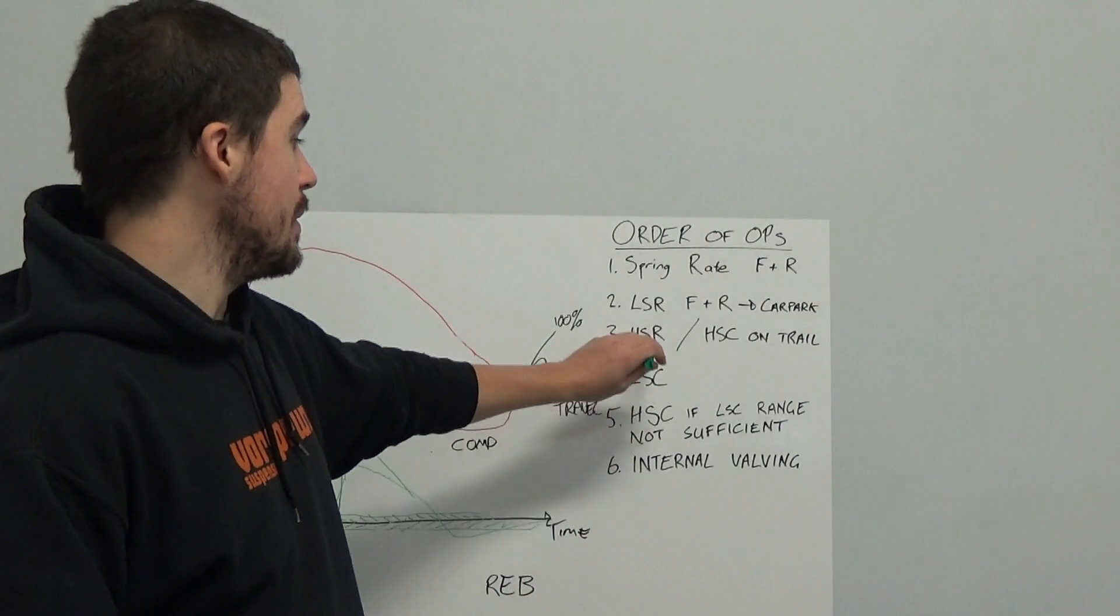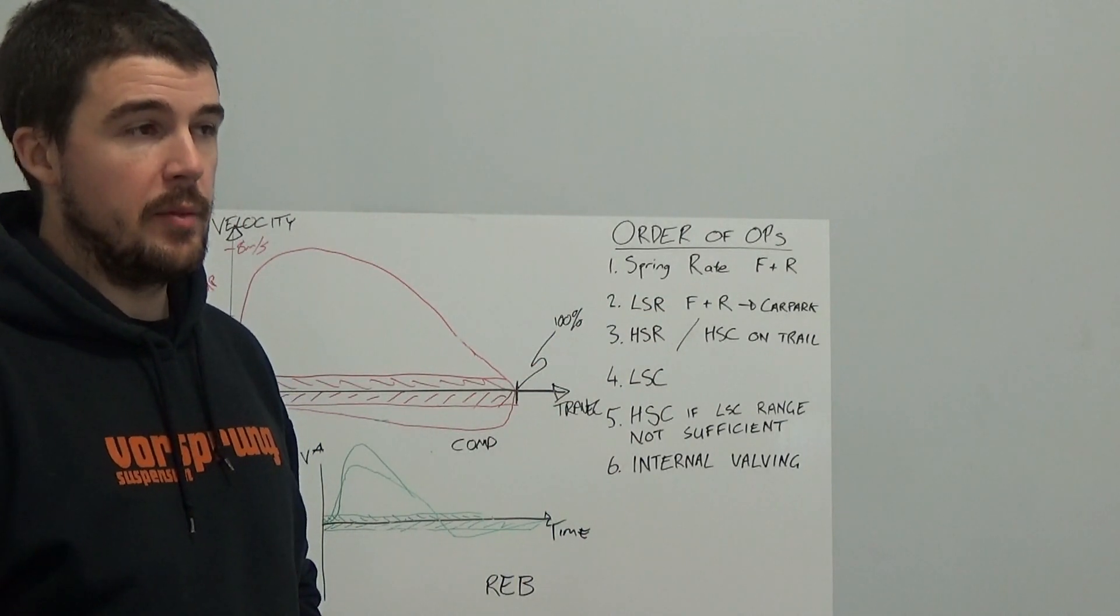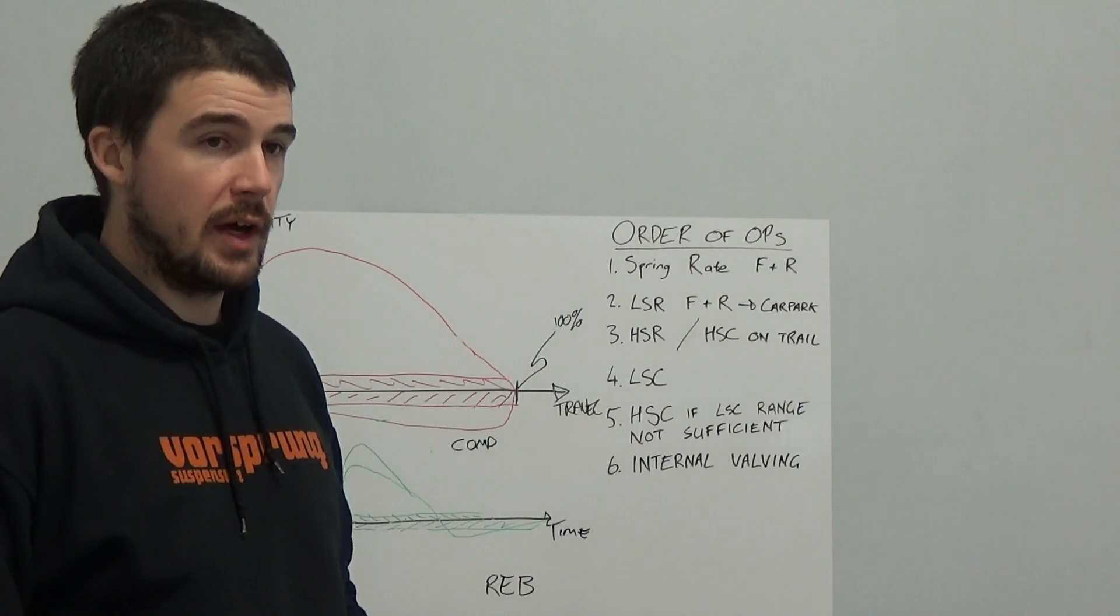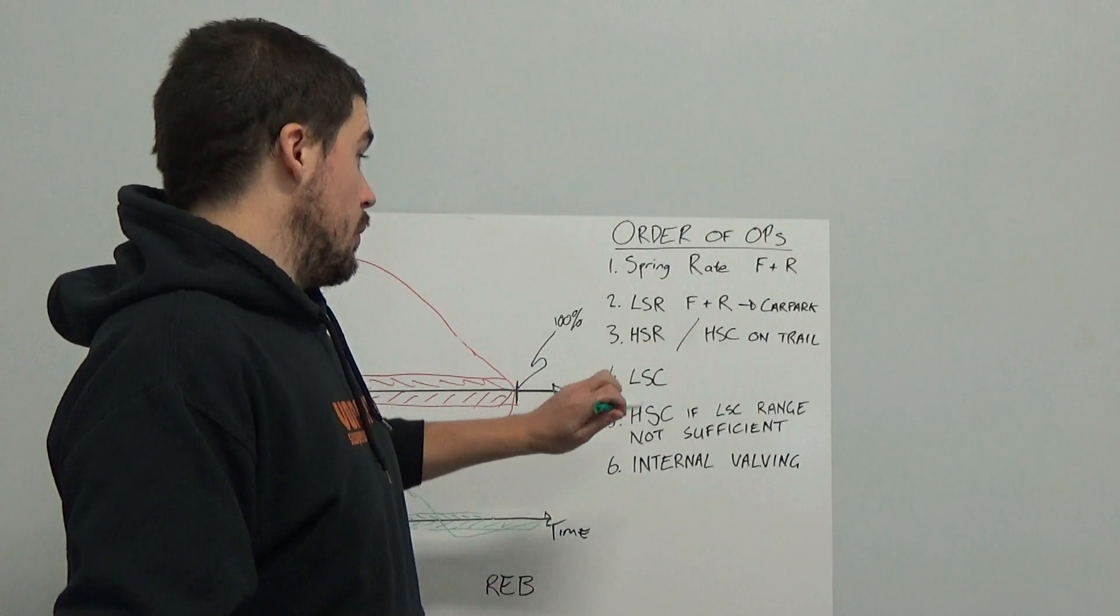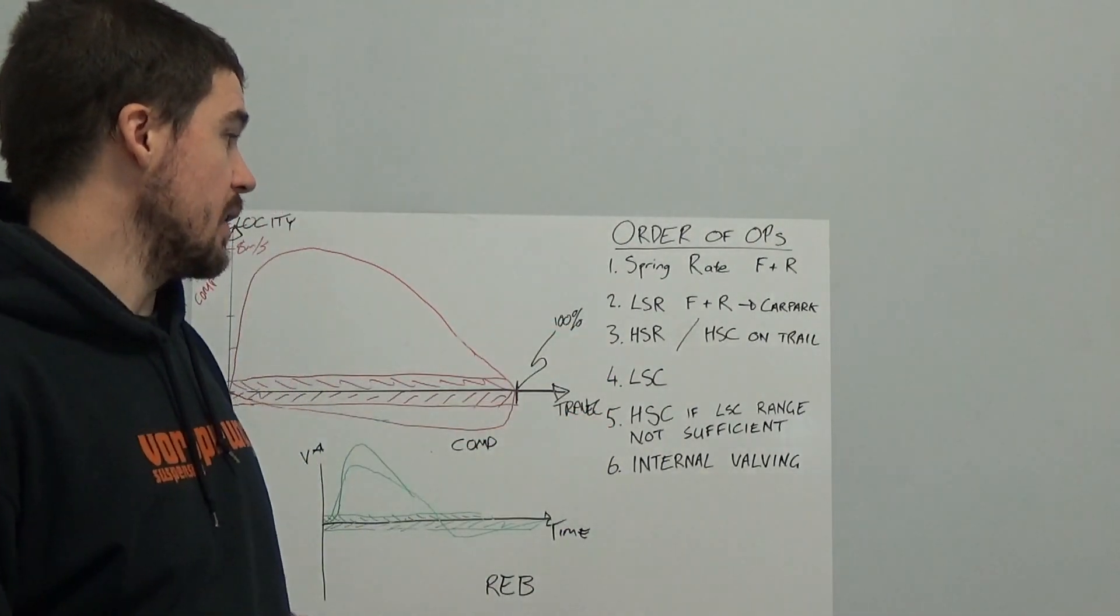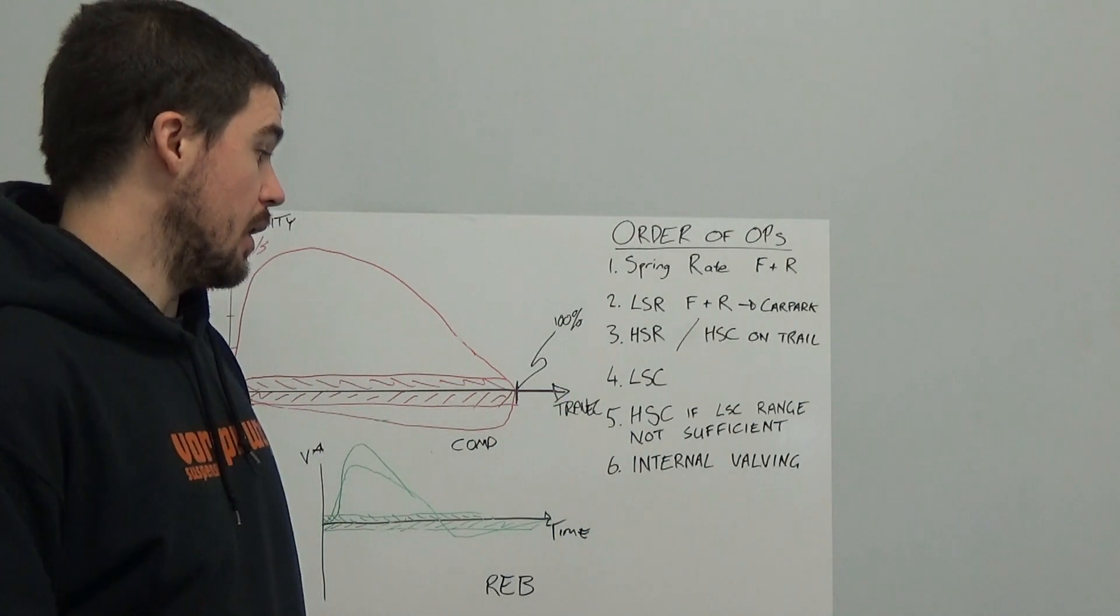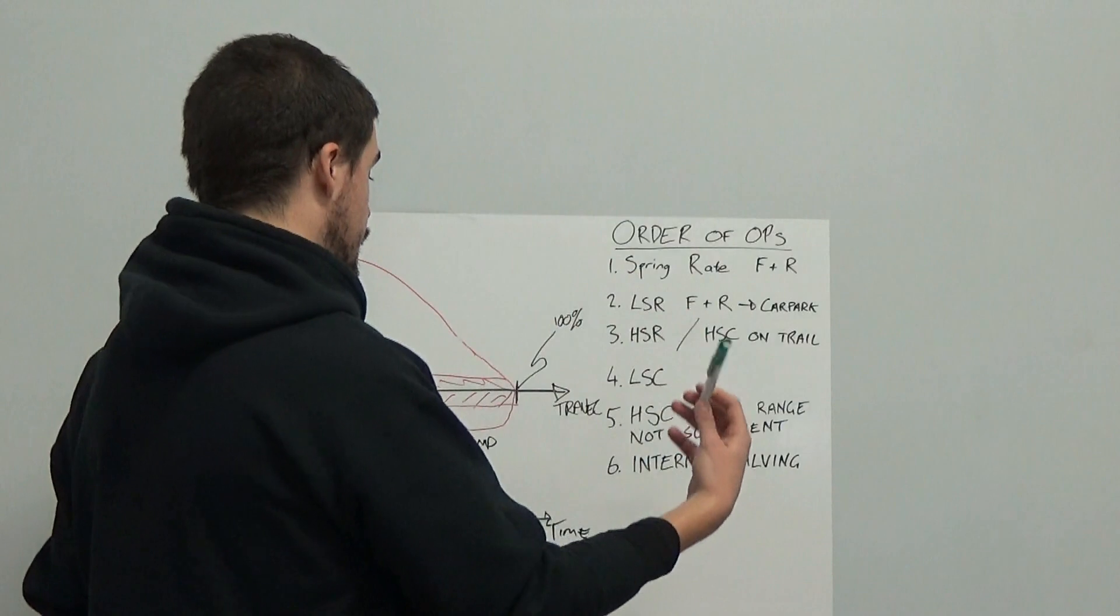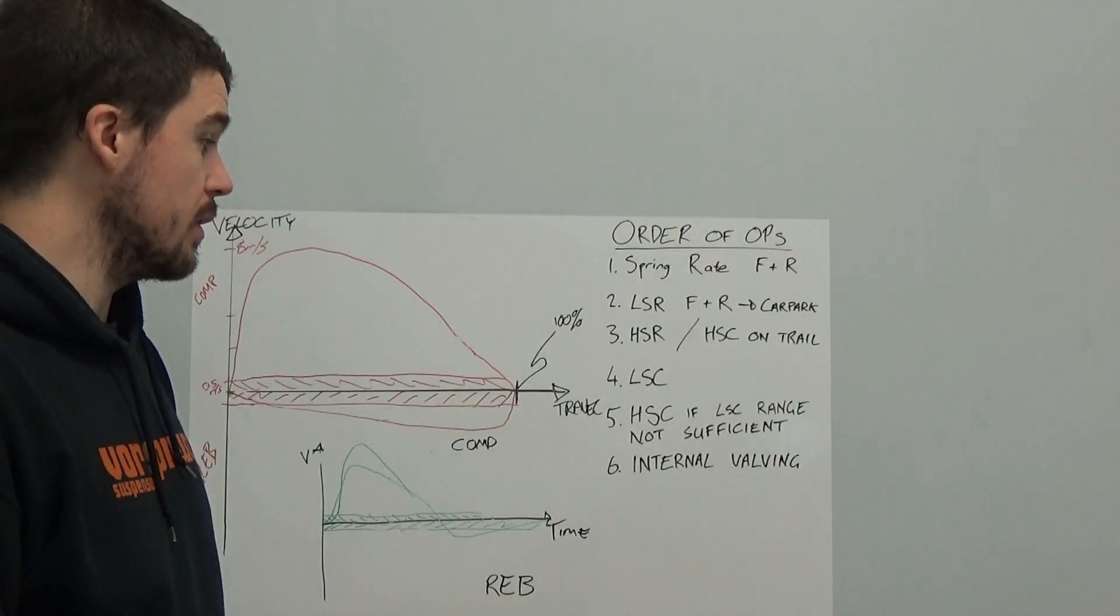Otherwise what happens is that you just choke off the flow through the low speed circuit and you get that delayed reaction there which leads to harshness but doesn't give you more support. Once you have your high speed rebound and compression set up on the trail, these don't have to be done in any particular order. They should both be done as you feel it is necessary. Then you can look at your low speed compression which is essentially the least important part of it all. The high speed rebound and low speed rebound, often you'll only have single adjuster and even when you don't, most of the time the low speed rebound adjuster is actually the dominant. This is especially true on the RockShox products.